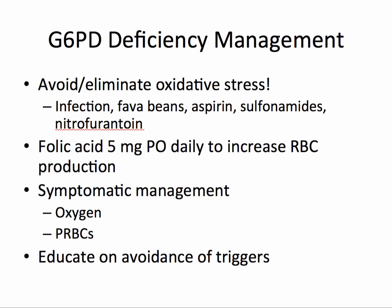In the management of G6PD deficiency, you'll want to avoid or eliminate oxidative stress. Folic acid 5 mg PO daily may increase red blood cell production. Otherwise, the management is based on symptoms — they may require oxygen or packed red blood cells.